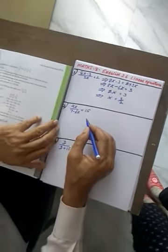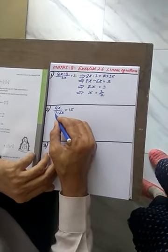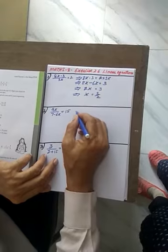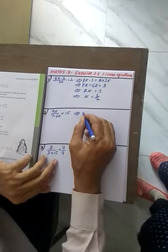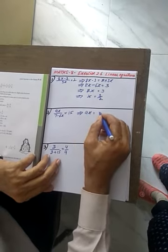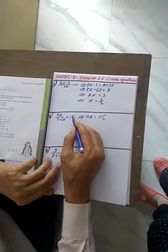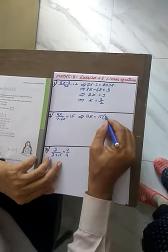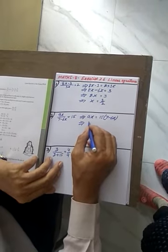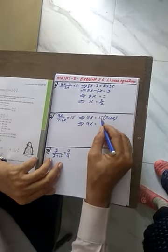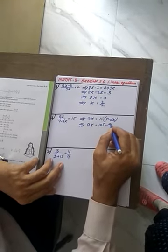Let us take up sum number second. 9x upon 7 minus 6x is equal to 15. This implies 9x is equal to 15 into, this goes, this side gets multiplied with 15. So this should give you 9x is equal to, 15 times 7 is 105, and 15 times 6 is 90x.